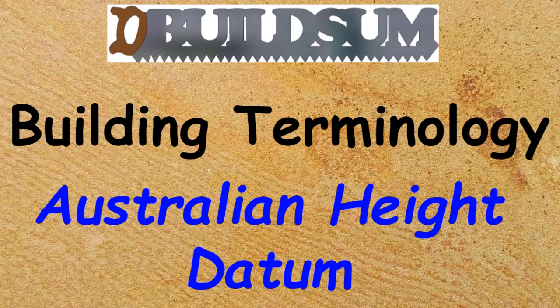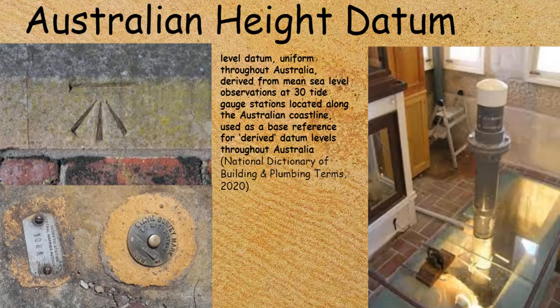This time I'm building terminology around the Australian Height Datum. The Australian Height Datum is a level datum which is uniform throughout Australia, and it's derived from the mean, or average, sea level observations at 30 tide gauges around Australia around the coastline. You can see there on the right what a tide gauge looks like.